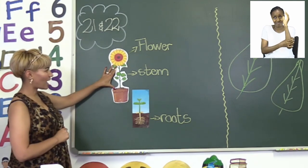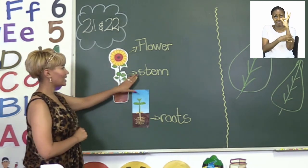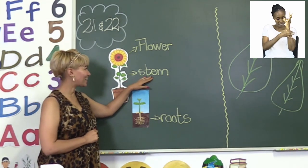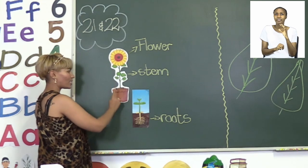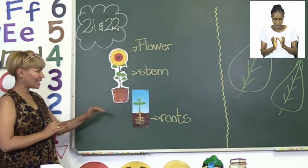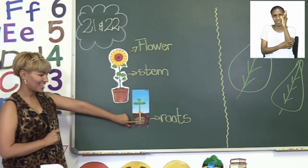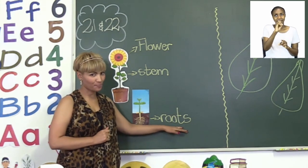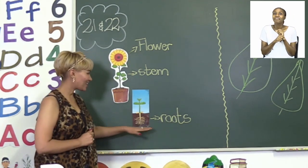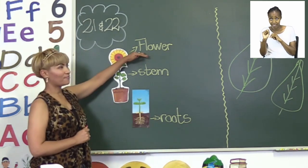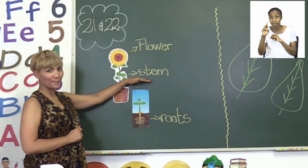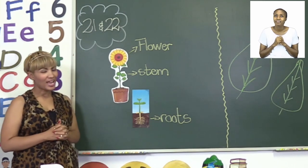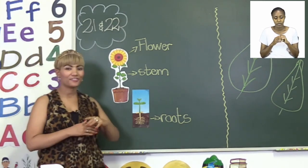This part that the flower grows on is called the stem. Can you say it with me? Stem. Now here you will see this flower is inside a flower pot, and what we have down here we call the roots of the flower. Say it with me: the roots. So we have a flower, a stem, and we have the roots of the flower. These are all the different parts of a flower, boys and girls.